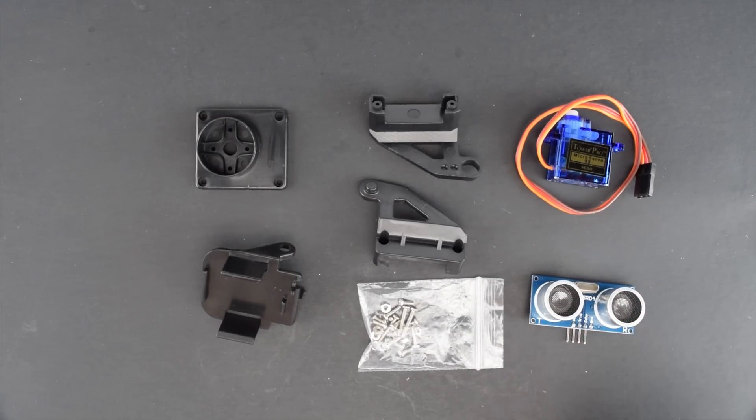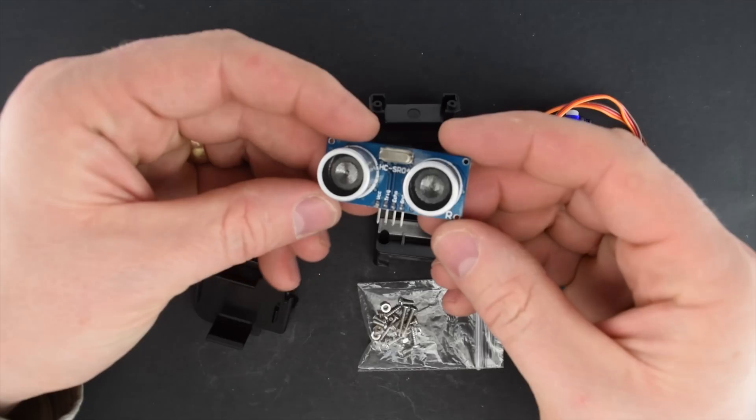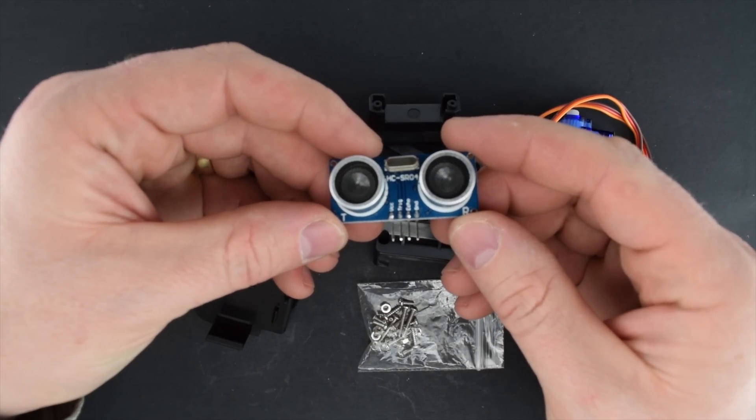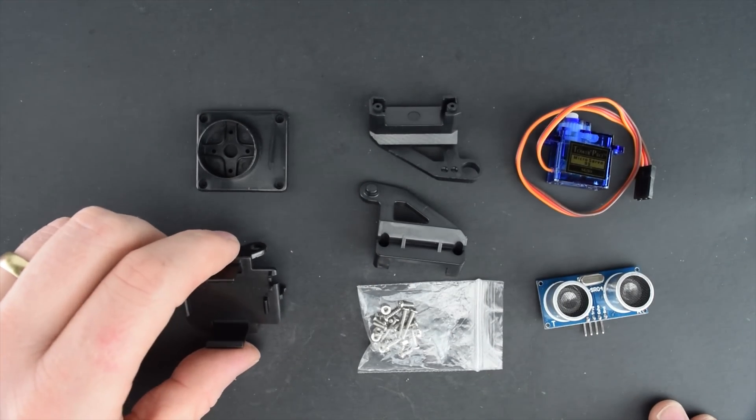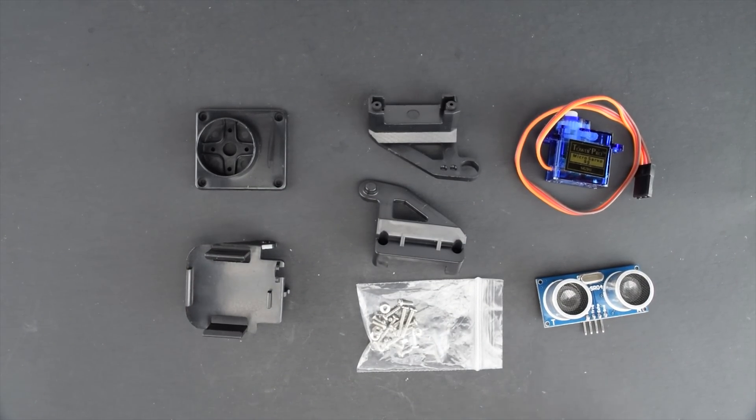If you're building one of the smart car kits, you're going to want to go ahead and grab your SR04 ultrasonic sensor as well. It's part of the process of making the pan and tilt, so I'm going to go ahead and do that. But if you are building just the pan and tilt, go ahead and skip the part where we fix the sensor.